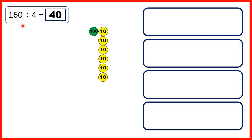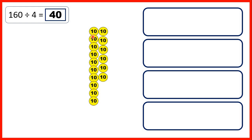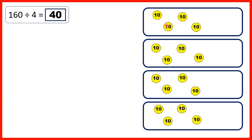Then for our last question, we had 160 divided by 4. 160 means we have 1 hundred and 6 tens, but again we can't share out our 100 counter, because we need to make equal groups. So instead we exchange the 100 for 10 tens, and that gives us 16 tens altogether. When we share those out, we get 4 tens in each group, so that's why our answer is 40.